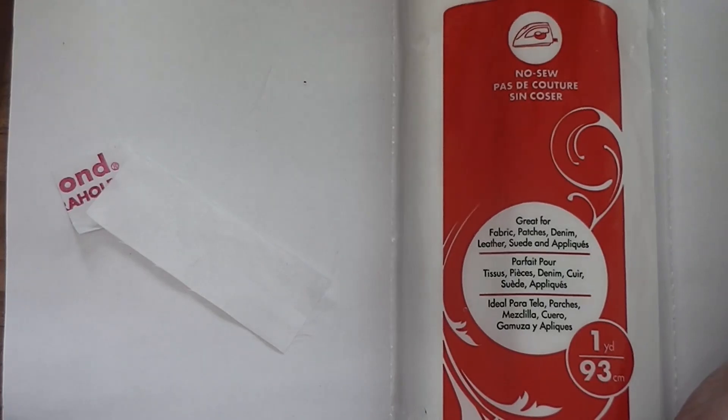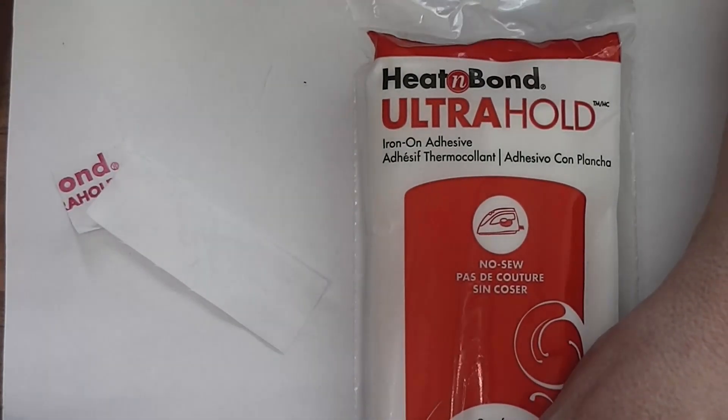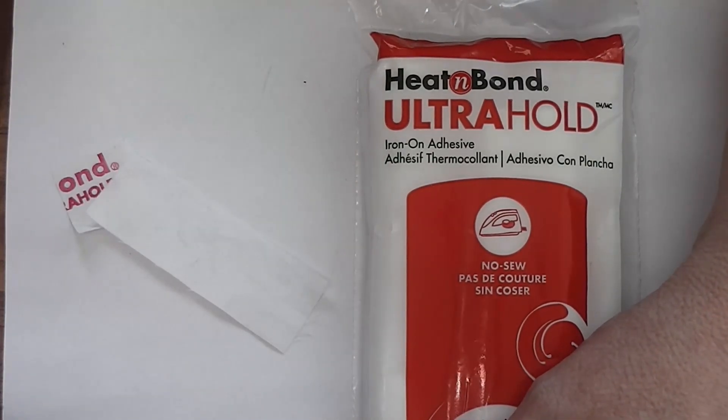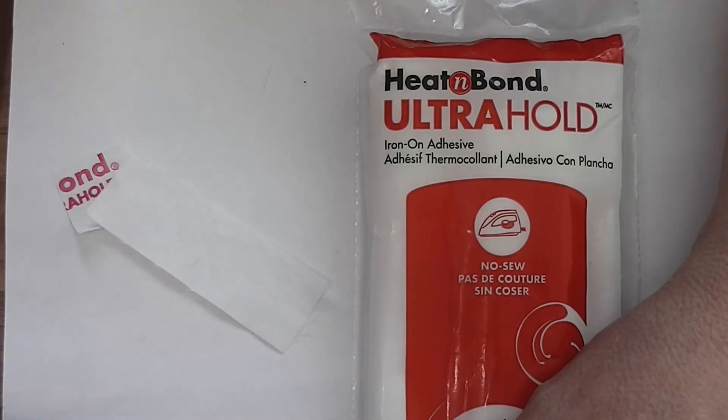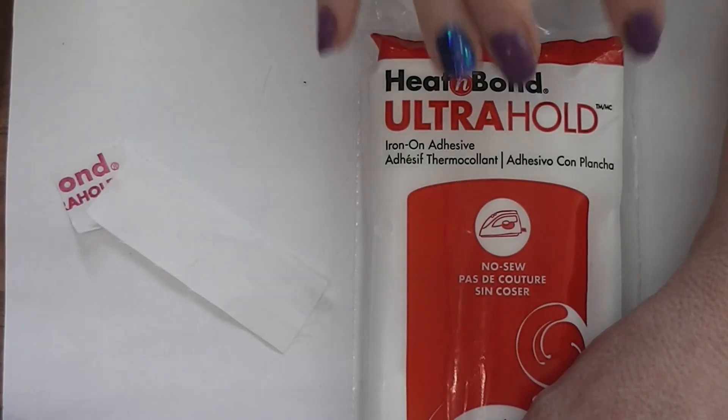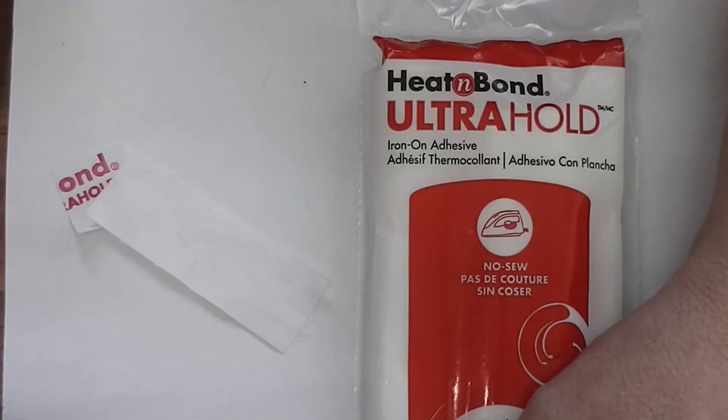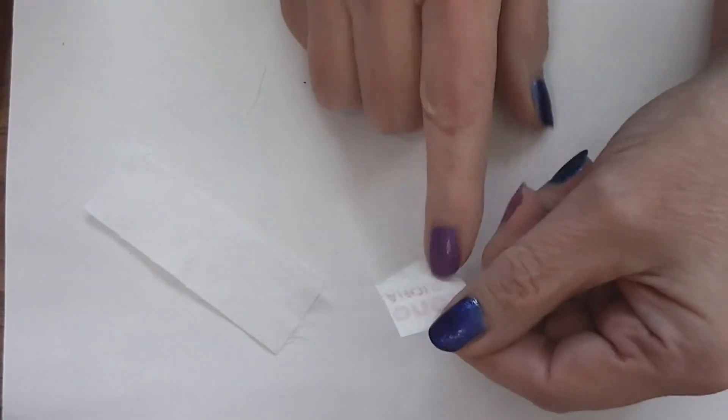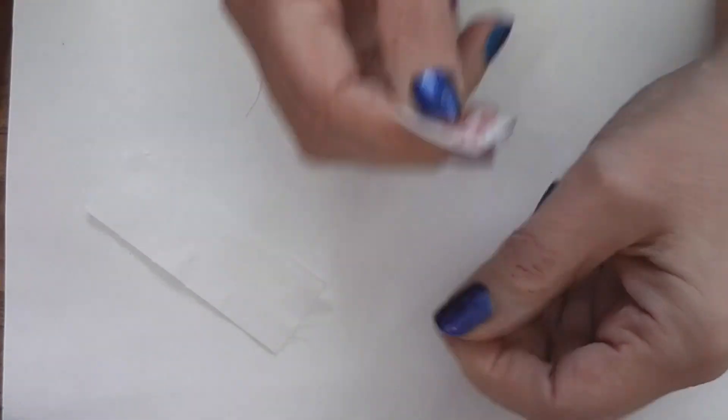What I've got here is heat and bond ultra hold. You need an iron-on adhesive, iron-on paper backed adhesive for this project. This is what I'm using for all of the flags so far. It's basically a piece of paper with fabric glue that's heat activated on one side, the paper on the other.